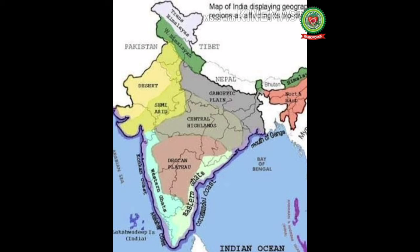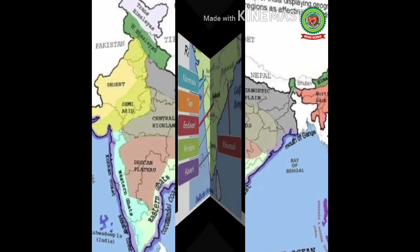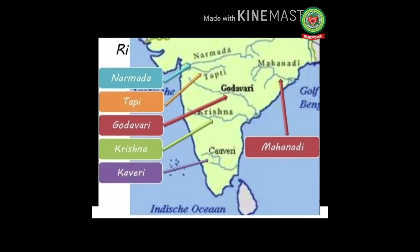The Peninsular Plateau of India is known as the storehouse of minerals. The Deccan Plateau is higher in the west and lower in the east. It is a monsoon land, and many rivers in the Western Ghats flow towards the east due to the slope of the land. It is a highly dissected plateau, cut up by a large number of east-flowing rivers.